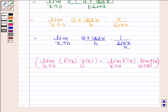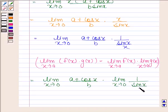So using this, this is equal to limit x tends to 0 a plus cos x by b into limit x tends to 0 1 by sin x by x.